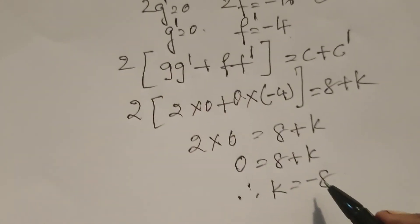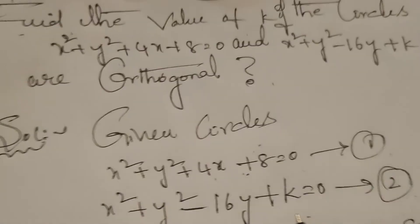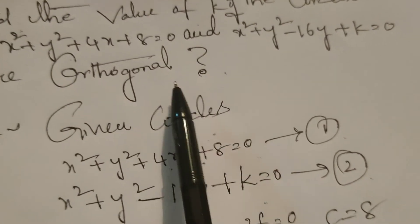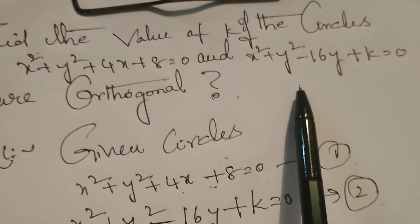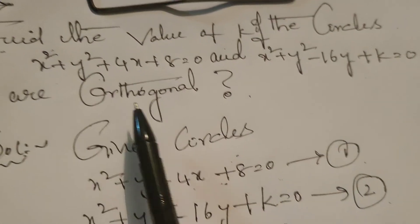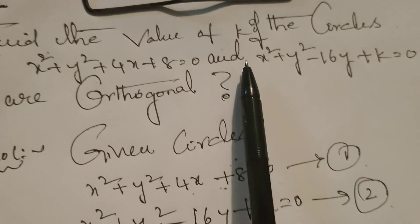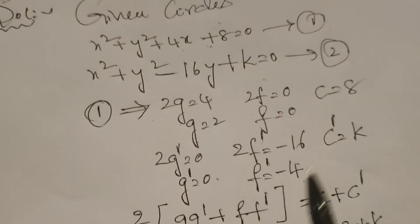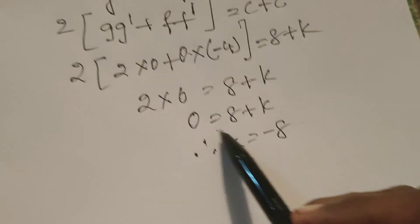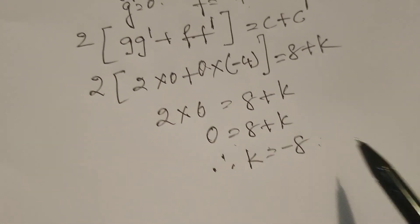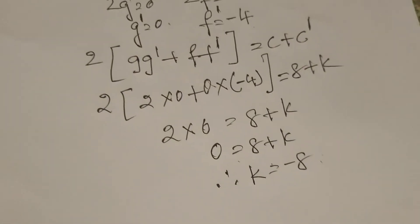Our problem was to prove that the given two circles are orthogonal — that is, the given two circles satisfy the orthogonal condition — and also find out the value of k. So we get k equals minus 8. Thank you.